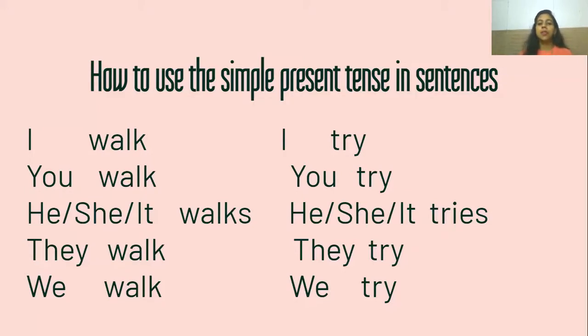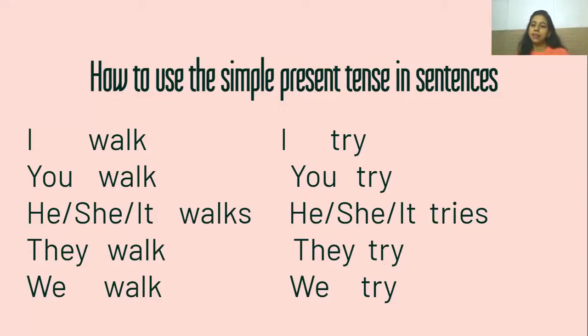For example, he walks on the road. And for the verbs ending in Y, you will remove the Y and add I-E-S to the word. Again, this rule applies only for the third person.